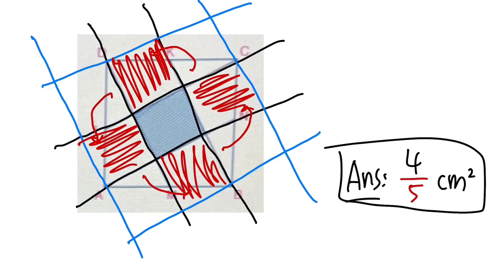So all together we have one, two, three, four, five. Five squares and the whole thing is four. So four divided by five, and we are done. That's it.